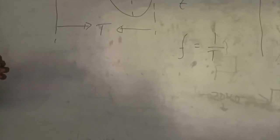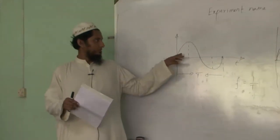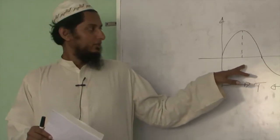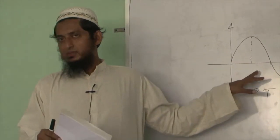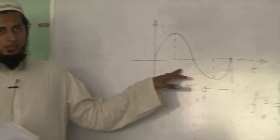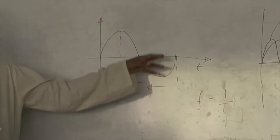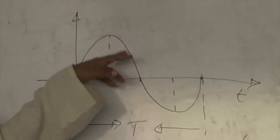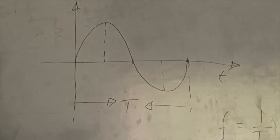Experiment name: Study of Audio Signal Generator. An audio signal generator is a device that generates sine waves. We saw the sine wave properties in the last class. The sine wave property means the voltage continuously changes. That is what we generate using the audio signal generator.